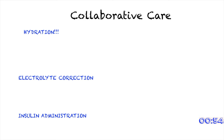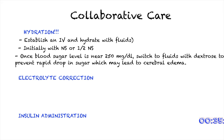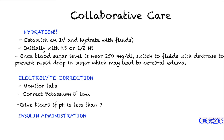Now let's talk about how to care for a patient that has diabetic ketoacidosis. There are three things to focus on. Number one is hydration — when a patient comes into the ER with signs and symptoms of DKA, establish an IV and hydrate with fluids right away. Initially, start with NS or half NS depending on what the doctor orders. Once blood sugar is near 250, switch the fluids to dextrose to prevent a rapid drop in sugar, which may lead to cerebral edema. The next priority is electrolyte correction — once labs are available, correct potassium if it's low. If the pH is less than 7, some doctors would order bicarb, since the presence of ketones makes the body acidotic.